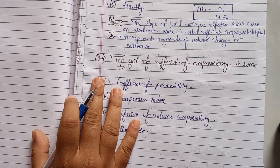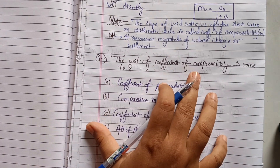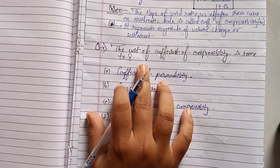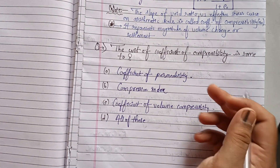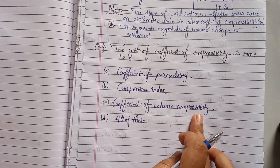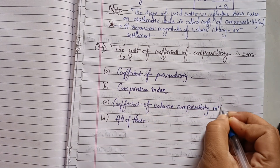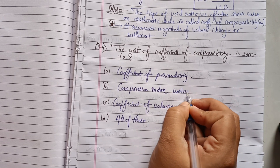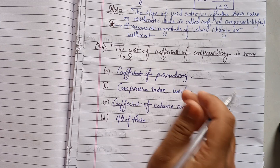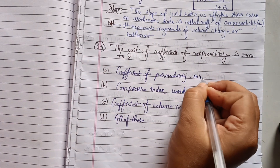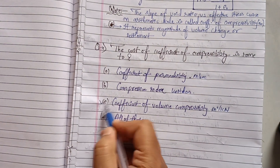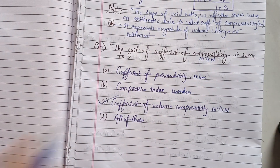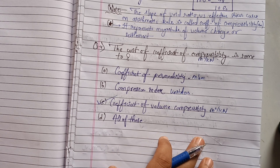Question four: the unit of coefficient of compressibility is the same as? The unit of coefficient of compressibility is m²/kN, and the coefficient of volume compressibility is also m²/kN. So the correct option is option C — both coefficient of compressibility and coefficient of volume compressibility share the unit m²/kN.